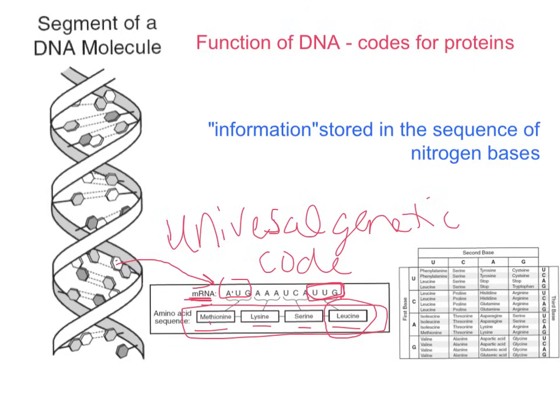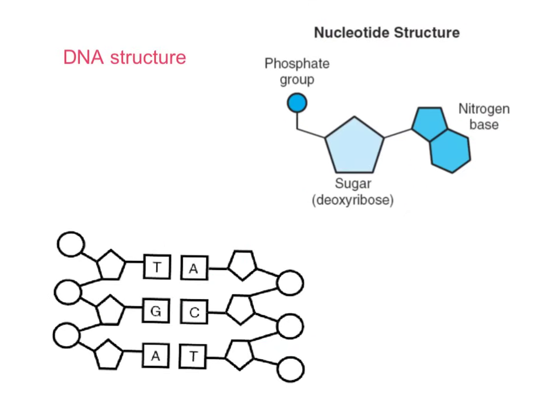Something important: this information is stored in the sequence of the nitrogen bases. When we talk about DNA containing our genetic information, all of that information is based on the order that the nitrogen bases are in. We'll look at those nitrogen bases in just a minute. So let's look at the structure of DNA to see how it does its job of coding for proteins.